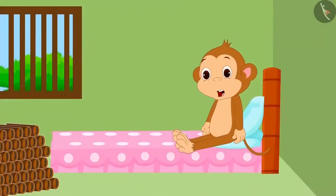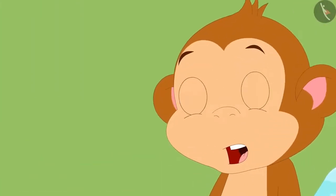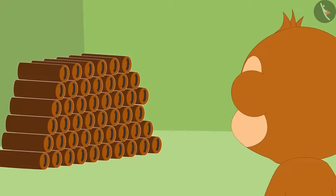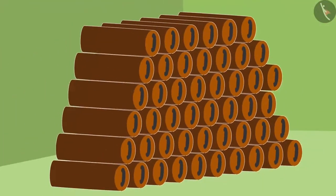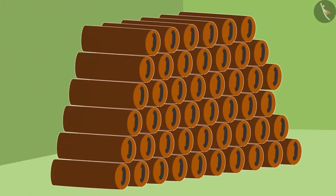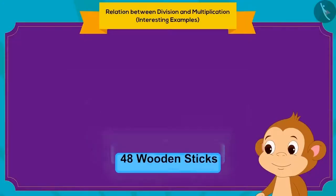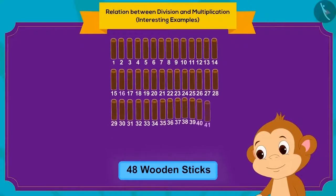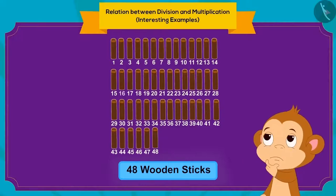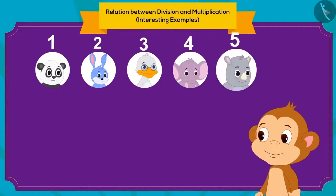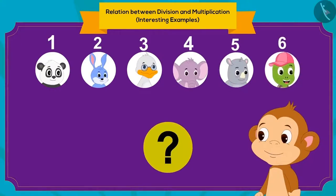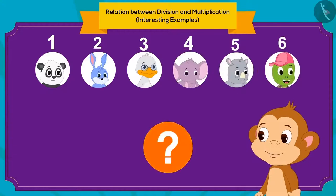Babban kept those sticks in a corner of his bedroom and slept. Next morning, when he woke up, he saw that those sticks had overnight turned into a large pile. There were 48 wooden sticks in total. He thought that he would divide these equally among his six friends. Can you tell how many sticks will each friend get?